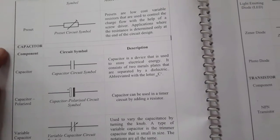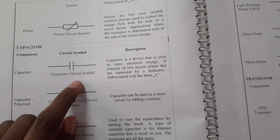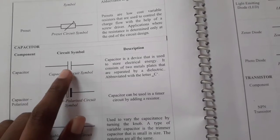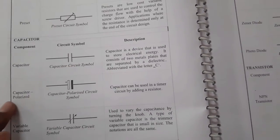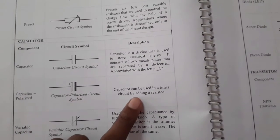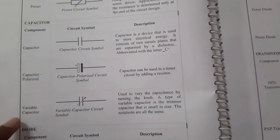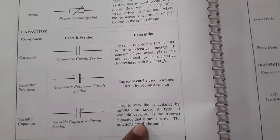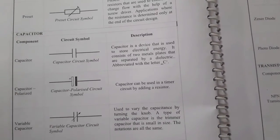Next is the capacitor — this is the symbol. A capacitor stores electrical energy using two metal plates separated by a dielectric medium. Next is a polarized capacitor — this is the symbol. Capacitors can be used in timer circuits by adding resistors. There is also a variable capacitor, whose capacitance value can be changed by turning a knob.